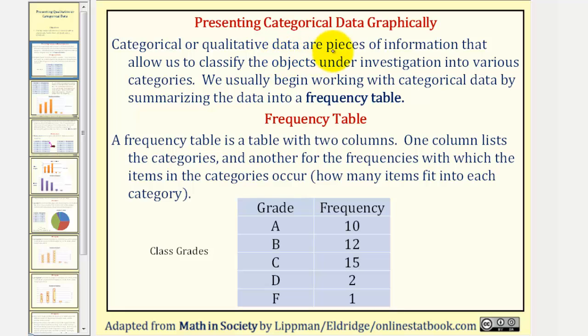Categorical or qualitative data are pieces of information that allow us to classify the objects under investigation into various categories. We usually begin working with categorical data by summarizing the data in a frequency table.